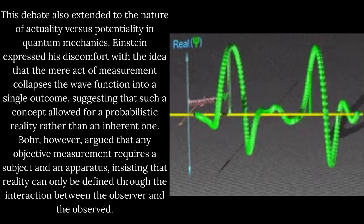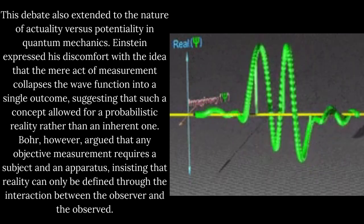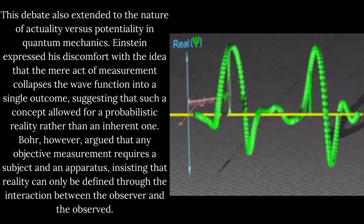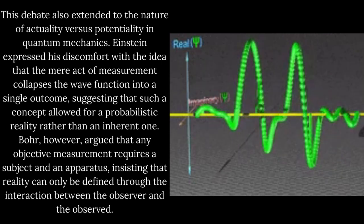Bohr, however, argued that any objective measurement requires a subject and an apparatus, insisting that reality can only be defined through the interaction between the observer and the observed.